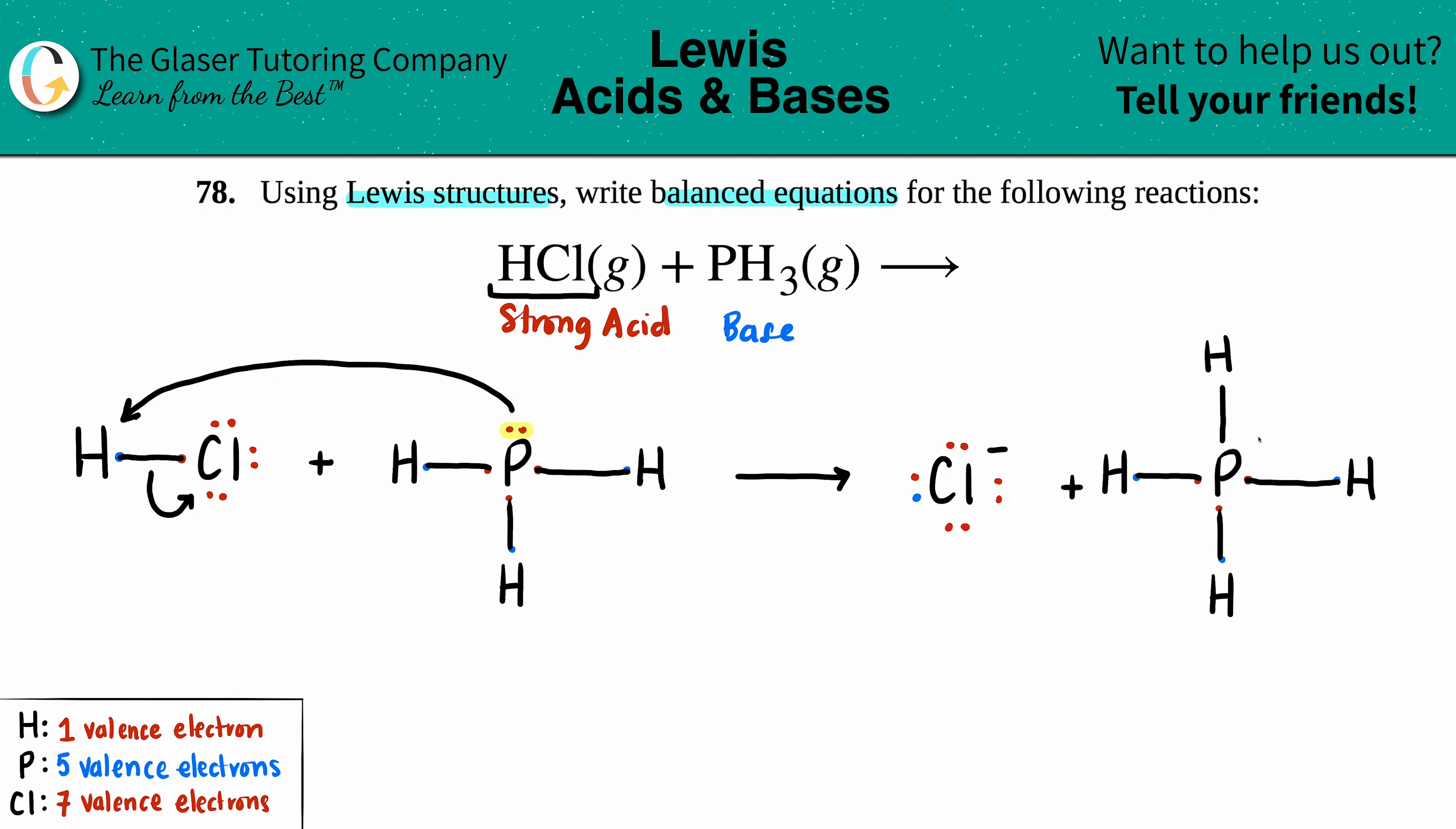That is the answer. What would be the balanced equation? This would make Cl minus plus PH4 plus. That is your final answer, and the Lewis structures are on the bottom as follows.